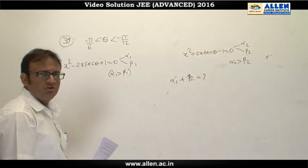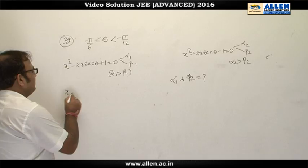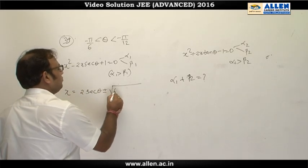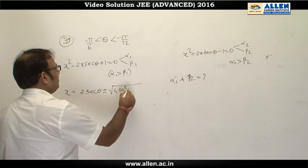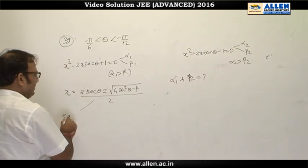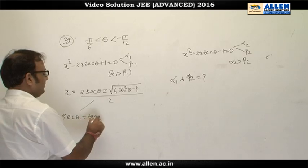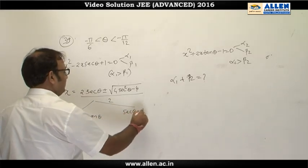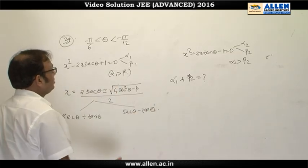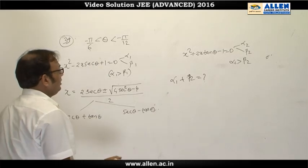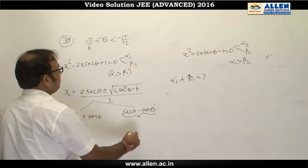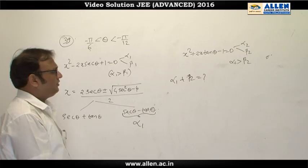We solve the first equation x² − 2x·sec θ + 1 = 0 using the quadratic formula, getting x = sec θ ± tan θ. So the two roots are sec θ + tan θ and sec θ − tan θ. Since θ is in the fourth quadrant, tan θ is negative and sec θ is positive, so the larger root is sec θ − tan θ. We take α₁ = sec θ − tan θ.